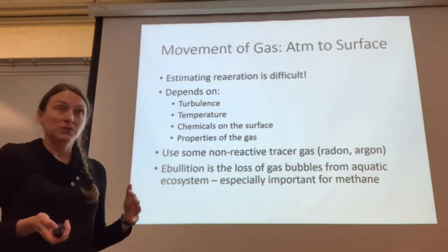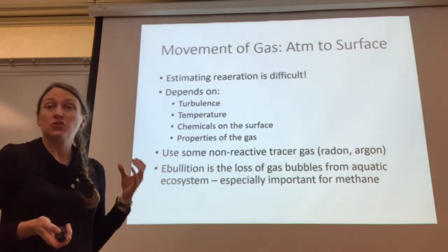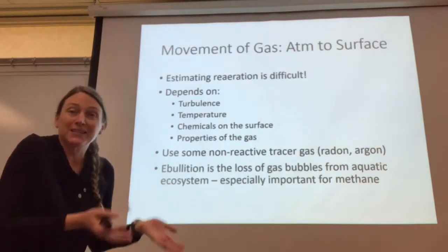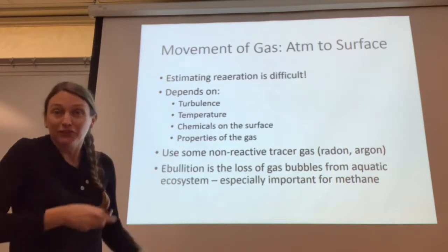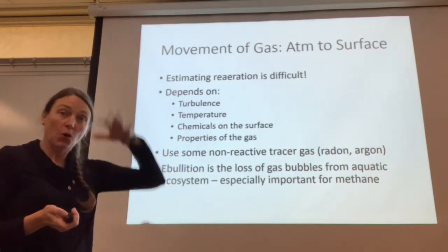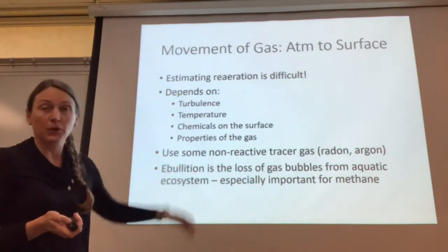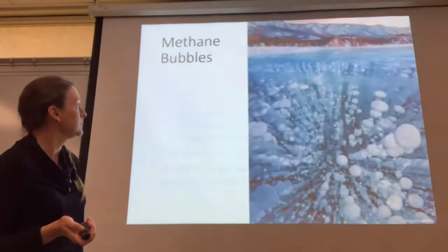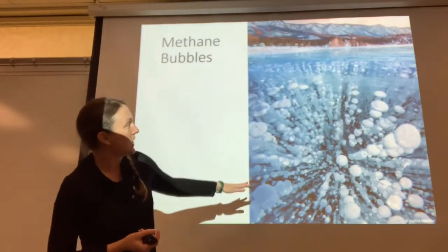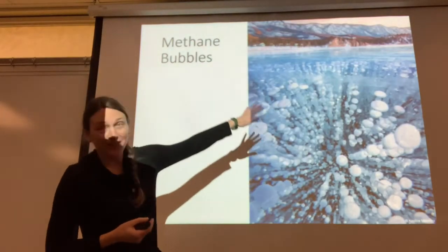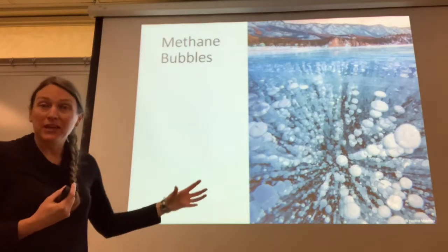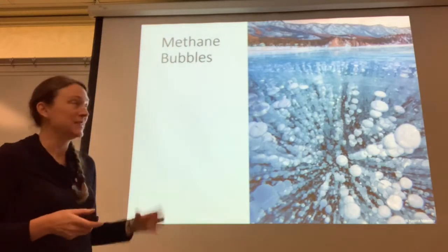A lot of people use gas bubbles trapped in ice to measure rates of methane flux from lakes up in the cold parts and the permafrost. Here's a picture of a lake that's frozen solid and all of these bubbles are bubbles of methane that have been trapped in the ice.